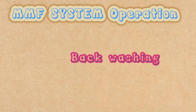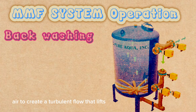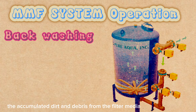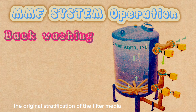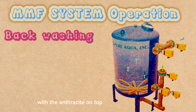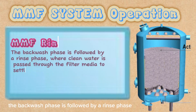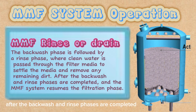During the backwash phase, the flow of water is reversed from the bottom to the top of the pressure vessel. The backwash water is mixed with air to create a turbulent flow that lifts and agitates the filter media, loosening and removing the accumulated dirt and debris and flushing them out of the pressure vessel. The backwash phase also restores the original stratification of the filter media, with the anthracite on top, the sand in the middle, and the garnet at the bottom. The backwash phase is followed by a rinse phase, where clean water is passed through the filter media to settle the media and remove any remaining dirt. After the backwash and rinse phases are completed, the MMF system resumes the filtration phase.